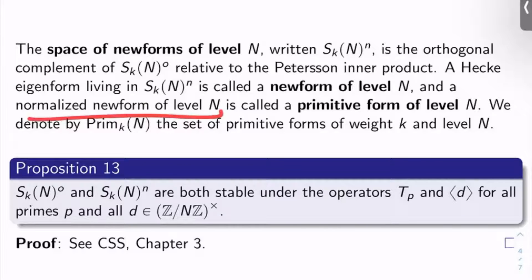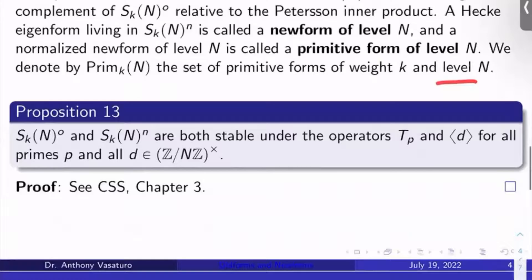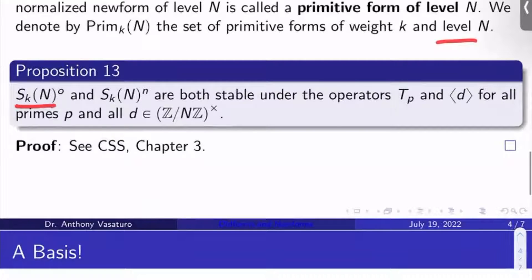If we have a normalized new form of level N, we'll call that a primitive form of level N. We'll denote Prim_K(N) to be the set of primitive forms of weight K and level N. And so a crucial proposition, S_K(N)^O and S_K(N)^N are both stable under all the Hecke operators T_P and all of the diamond operators, diamond of D, where D ranges over Z mod N Z cross. And this is proven in probably Diamond and Shurman chapter 5, but also CSS chapter 3.